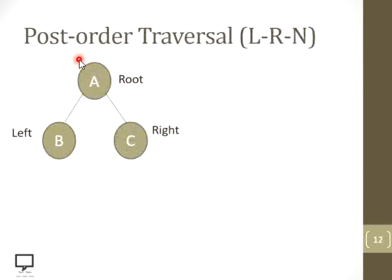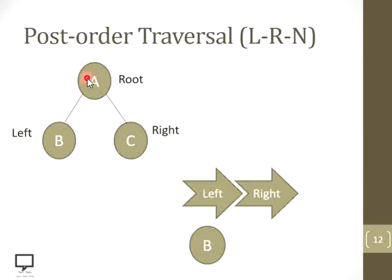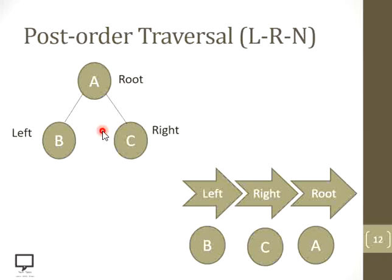Let's see with a simple example how to traverse a tree in post-order. Here A is the root node, B is its left child, and C is its right child. Starting from root A, we check for a left child — yes, B is present, so process it. Then we go to the right child of A — yes, C is present, so process it. At the end, we process the root node A. So the post-order traversal for this tree is: B, C, A.